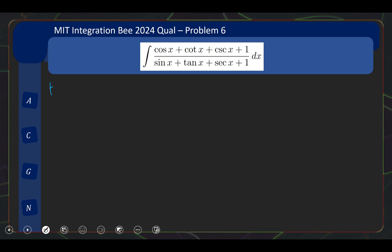So if we rewrite the top expression in terms of sine and cosine, what we have is the top is cos x + cos x/sin x + 1/sin x + 1, which you can actually factorize as cos x(1 + 1/sin x) + 1/sin x + 1. Not a bad start.